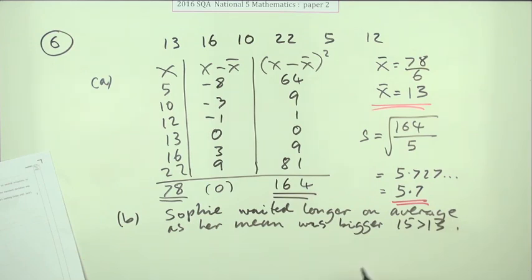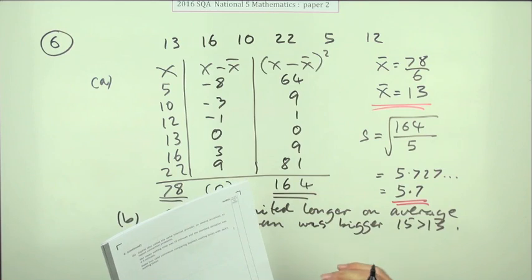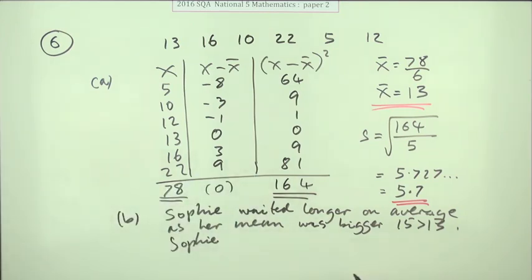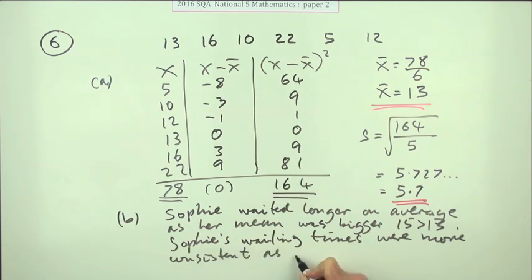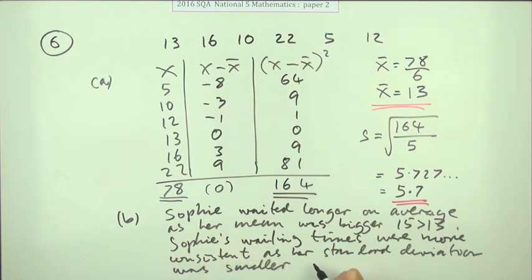Now what about the standard deviation? His was 5.7, hers was 4.3. Hers was less spread out. Sophie's waiting times were either less spread out or more consistent, as her standard deviation was smaller at 4.3, which is less than 5.7. I'm sure you don't need to do quite as much as that; that's just playing extremely safely.